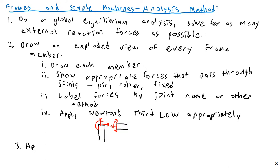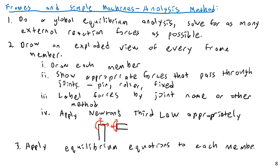Step three is to apply equilibrium equations to each member individually. You'll be doing sum of forces in X, sum of forces in Y, and a balance of moments. On any given member, you'll only be able to solve for three unknown forces because you only have three equations of equilibrium. You may have to work through many different members to solve for all the forces. This works if the frame is statically determinate, which we ensure in statics class.